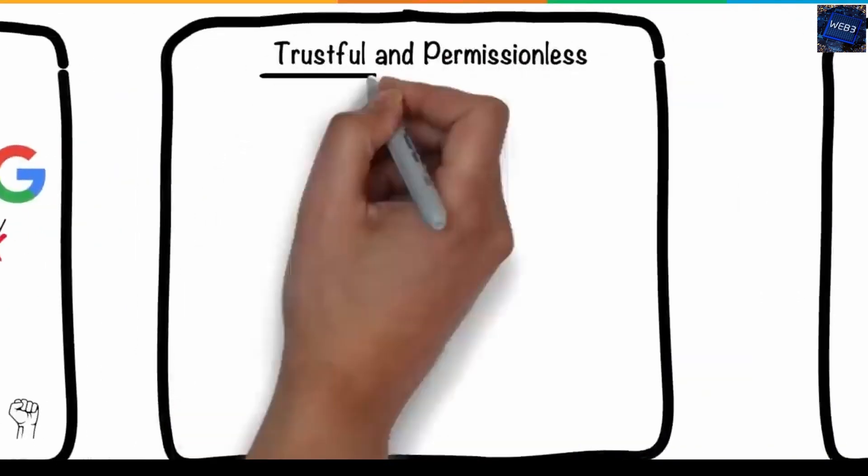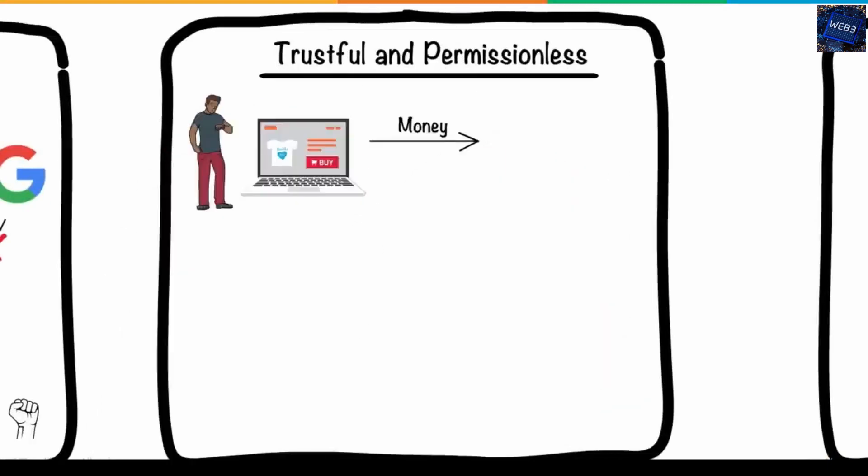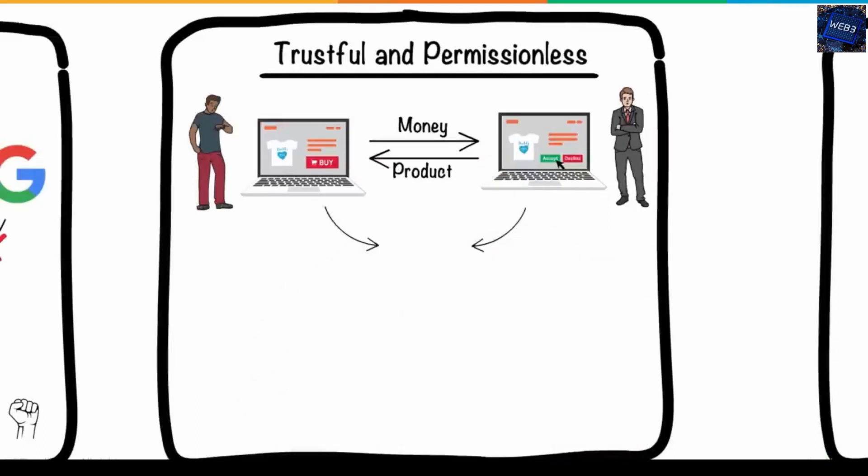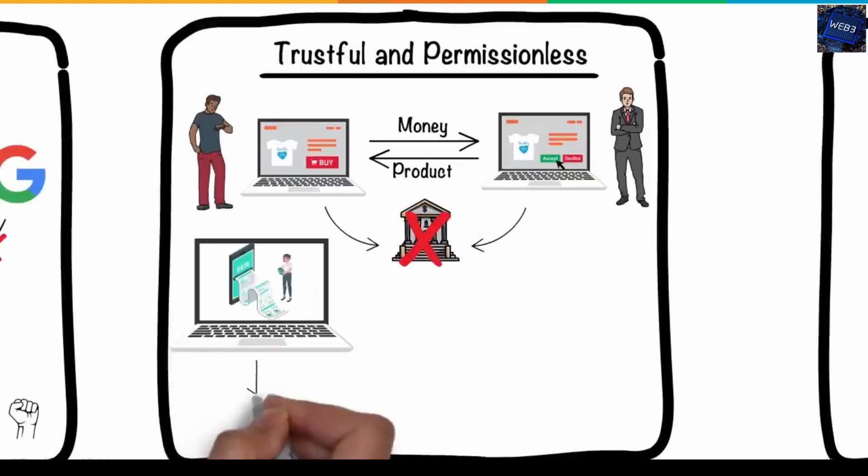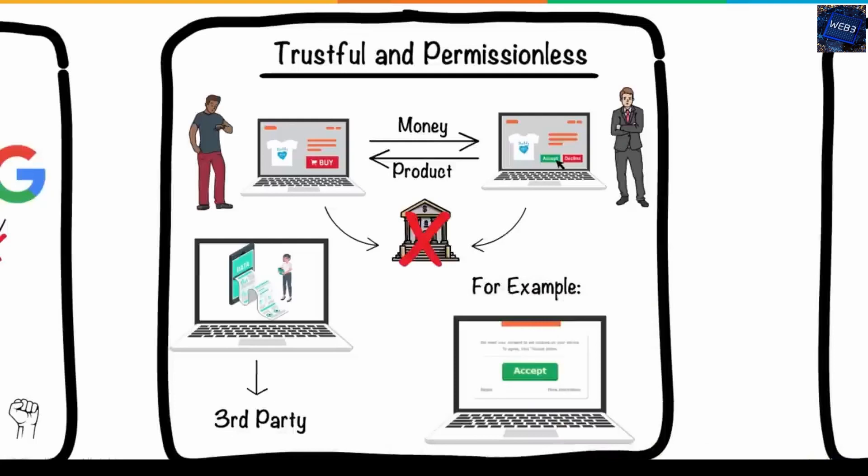Second is trustful and permissionless. Web 3.0 will also be trustful and permissionless, which means that participants will be able to interact directly without the need for a trusted intermediary or permission from a governing body. Due to this, you can access any data relevant to your choice, without any permission from any other node or third party. For example, if you are researching for some data, you don't need to accept its cookies, or you don't need to provide any sort of details, as there is a trustful bond between you and the web.